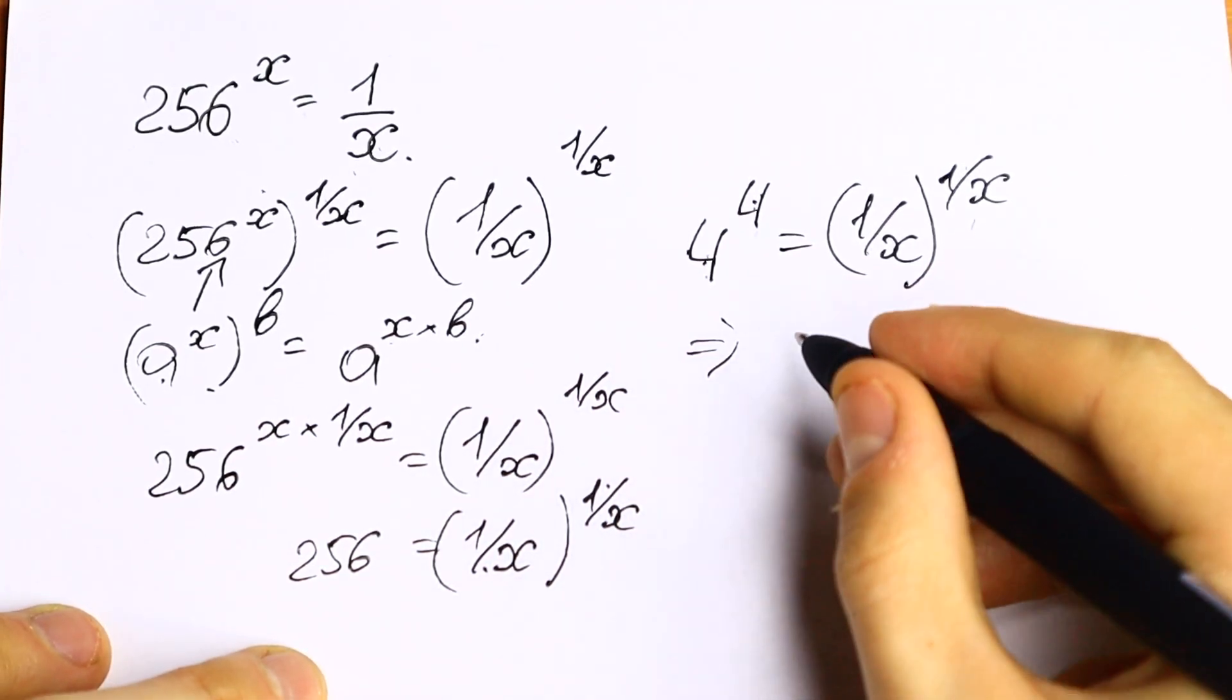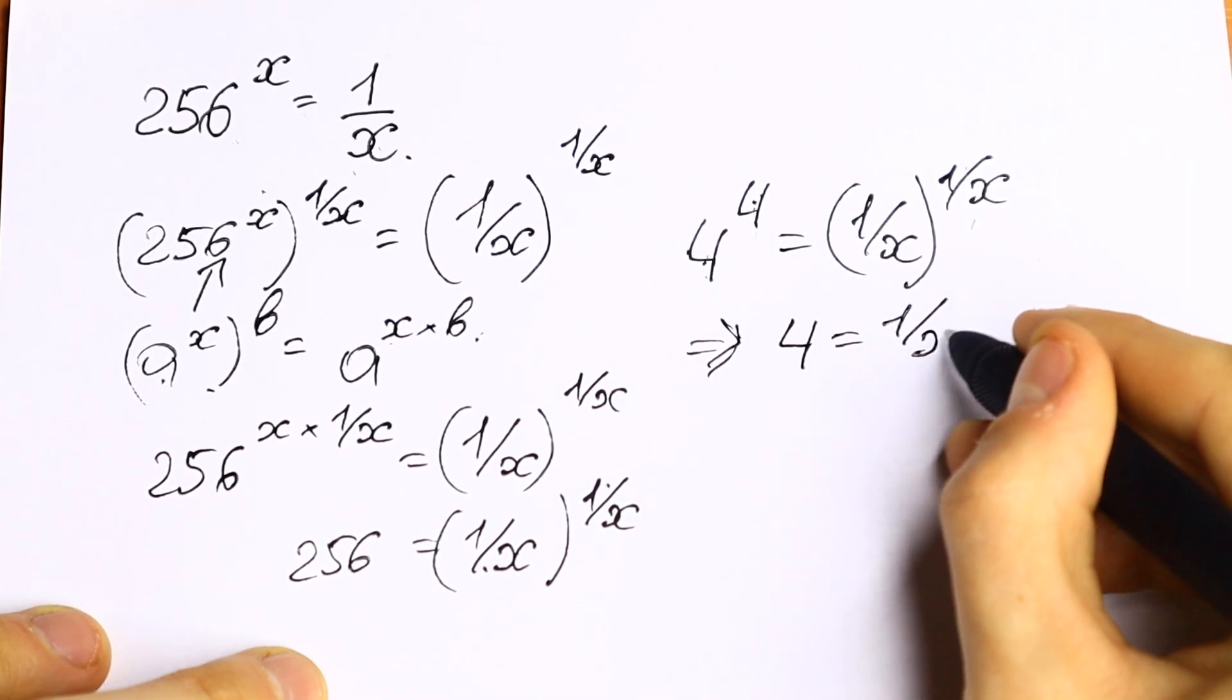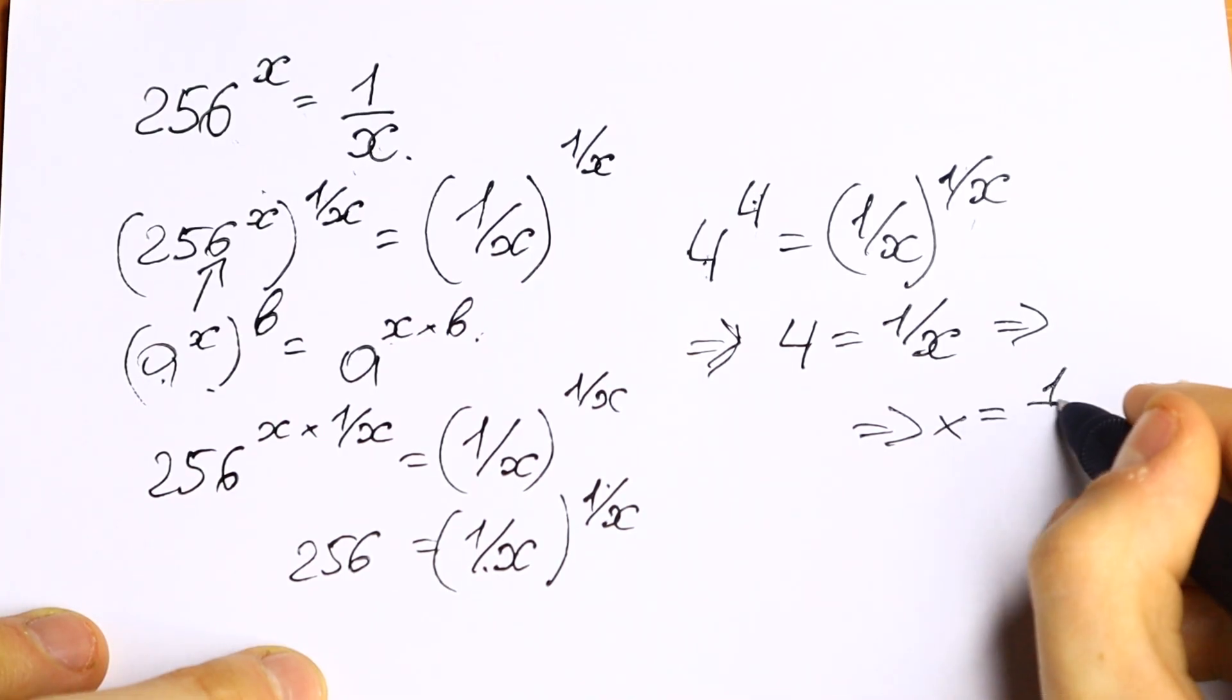So we need to write only one equation, that 4 equal to 1 over x. And from here, as you can see, x equal to 1 over 4.